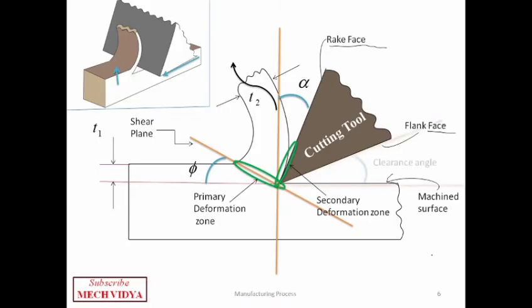Lastly, we have the clearance angle, which prevents the flank face of the tool from rubbing the machined surface. If there is no clearance, the flank face will rub against the machined surface and friction will take place, deteriorating the tool life and the surface finish. Care has to be taken that the clearance angle should not be too high or too less; there has to be an optimum limit.